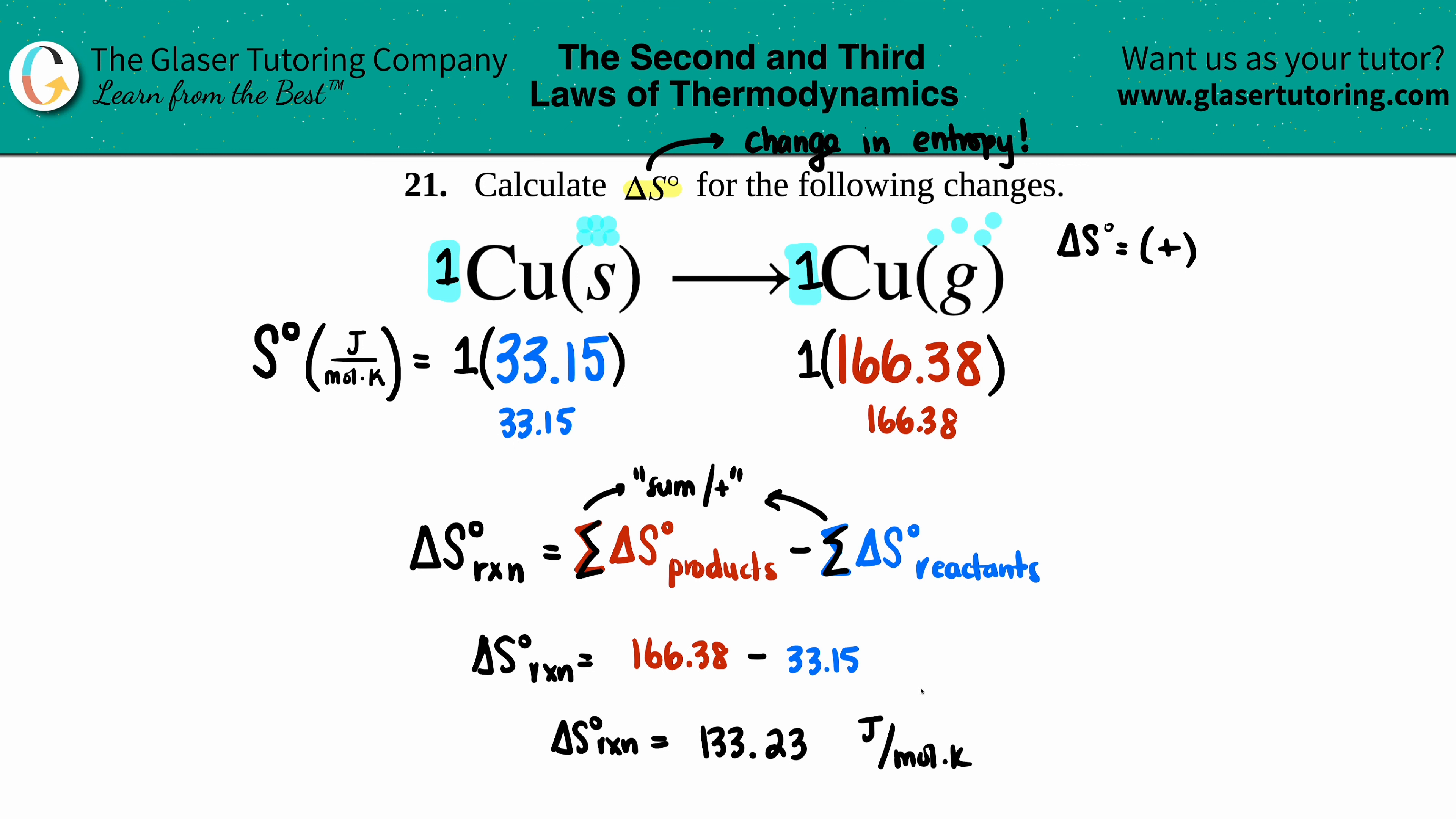And the units for a delta S value is always joules per mole times Kelvin, which is the same thing as this - it doesn't matter whether you slash it this way or slash it this way, it's the same thing. And that is your answer. Not bad, what do you think?